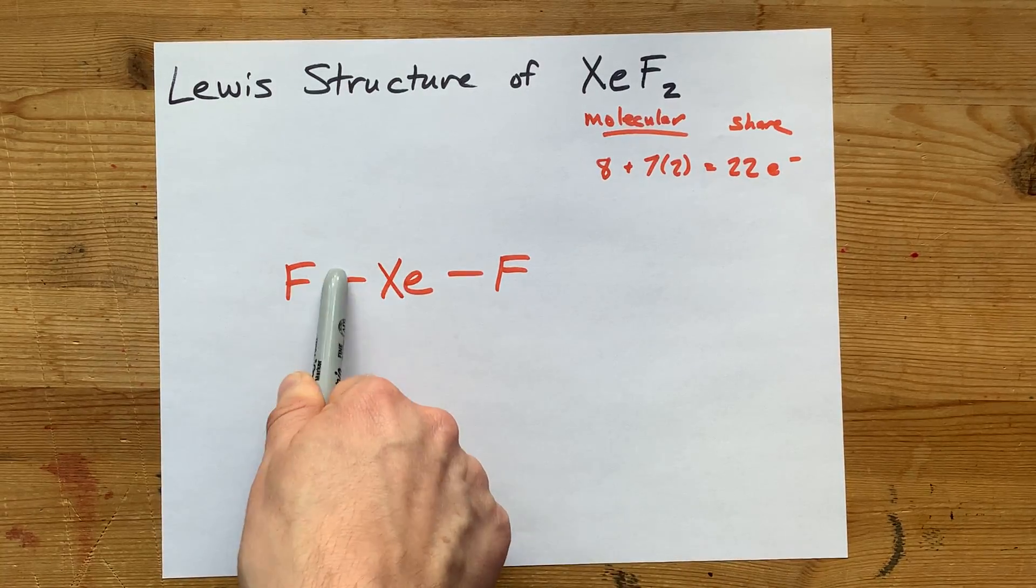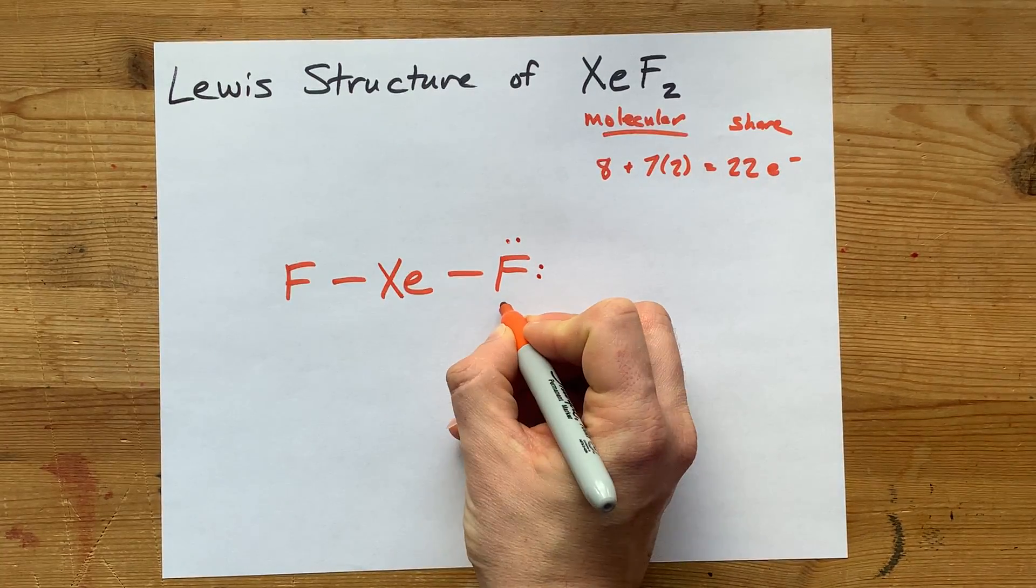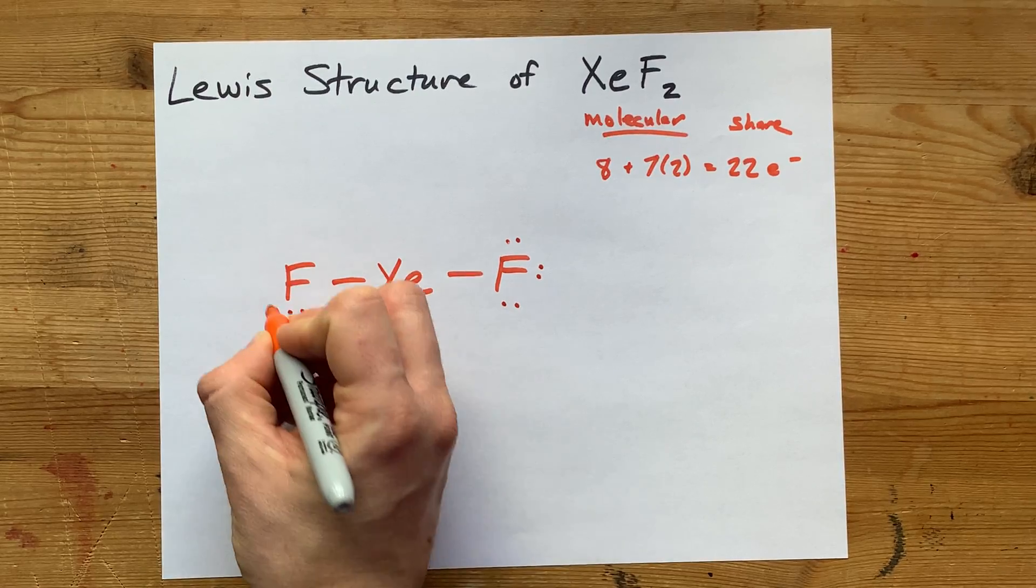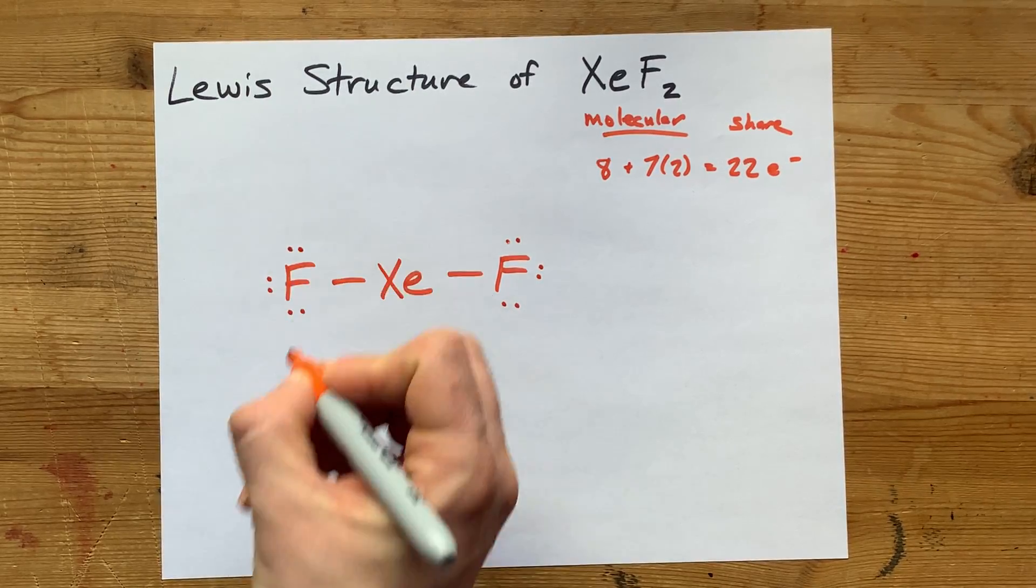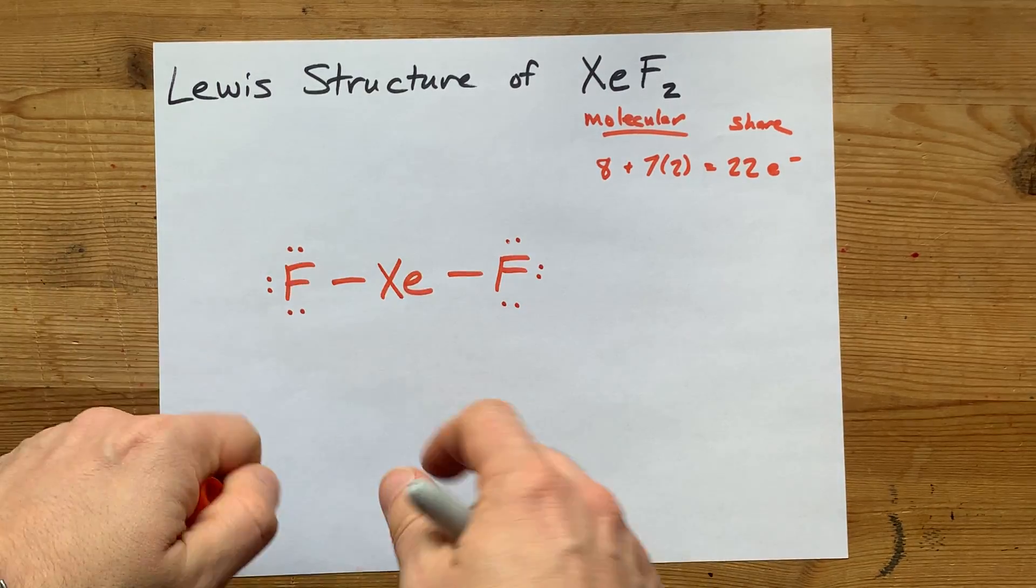Step two was done. Add lone pairs to complete the octets of the outer atoms until they're full. Now, I'm going to be careful not to go over 22 electrons, but we do need to complete the octets of these fluorines. I already have two, counting up to 16 electrons total. And the octets of my fluorines are complete.